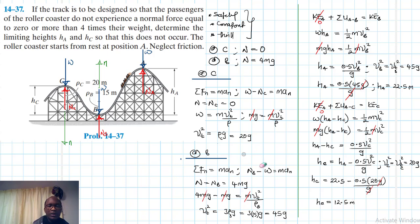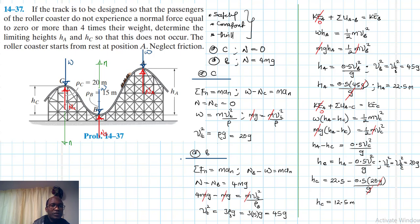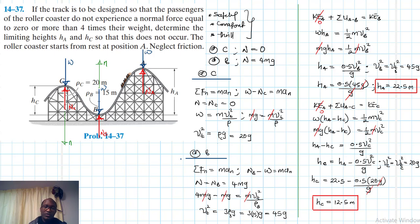We are done. We have found the limiting values: h_a equals 22.5 m and h_c equals 12.5 m. I hope this video is helpful — if it was, give it a thumbs up, keep subscribing and sharing the channel. See you in the next screencast.